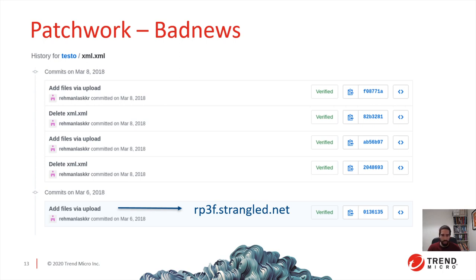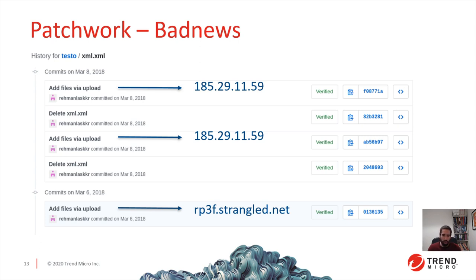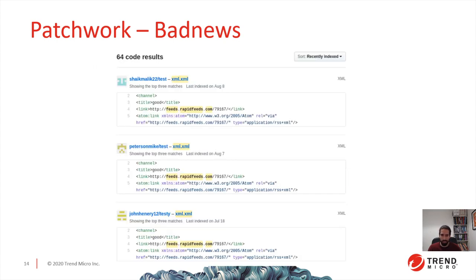We can see that on March 6th, the CNC server was one particular domain name, but then two days later it changed — twice — to an IP address. So with one single sample, you can get multiple command and control servers. But it's even better than that: you can actually use the GitHub search features, which is what we did. With only one sample, we found 64 different command and control servers. This is very interesting because from a defender perspective, with only one sample, you get all the attacker infrastructure.